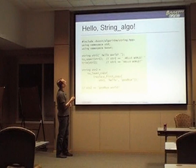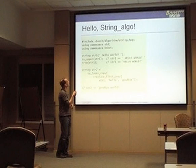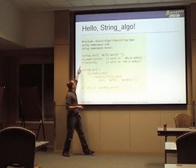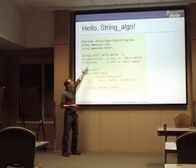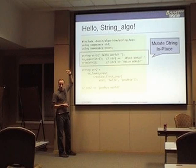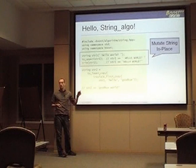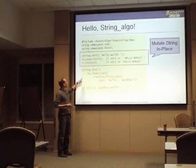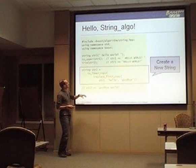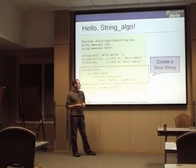Here's an example of using string algorithms. Just include the string algorithm header. Declare a string and initialize it. Now we have these string algorithms — appropriately named to_upper. This will mutate the string in place, so it's really efficient. If you have a string and you want to mutate it in place, to_upper or trim will chop the spaces off of it. And this one down here will create a new string.